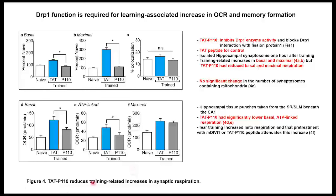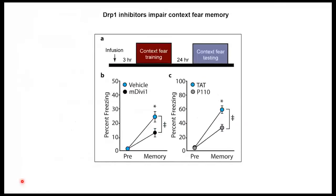Finally, they used TAT-P110, another DRP1 inhibitor, in a memory experiment. They trained mice and then added the DRP1 inhibitor to assess long-term memory. The blue color is vehicle, black and gray are DRP1 inhibitors. When they inhibit DRP1 function, long-term memory is decreased for both drugs. So DRP1 is important for the number of mitochondria and for increasing mitochondrial function, and this mitochondrial function positively affects long-term memory in mice.